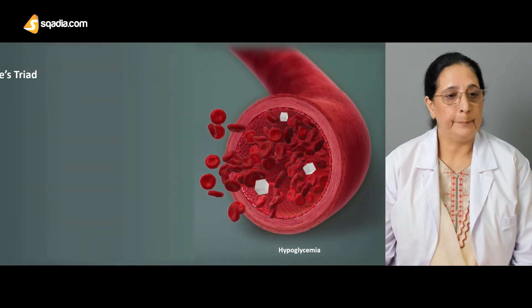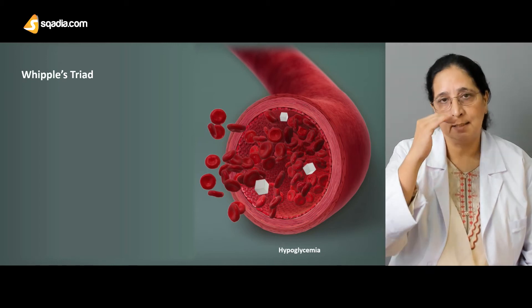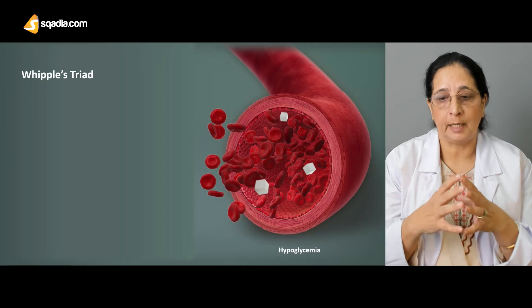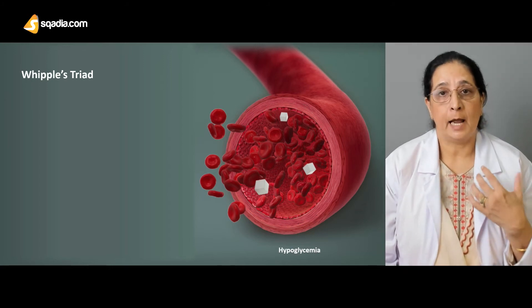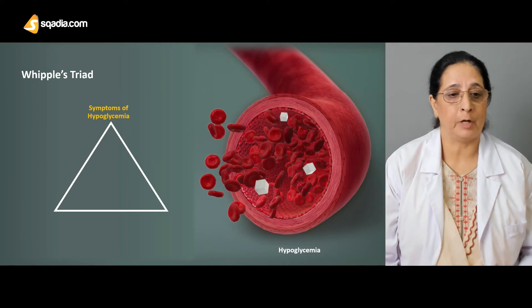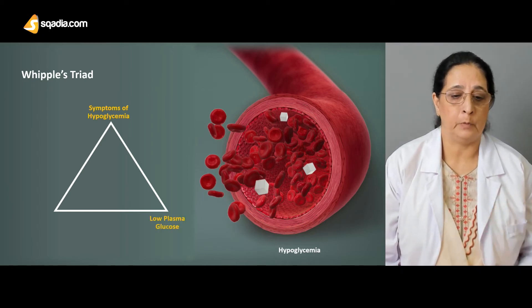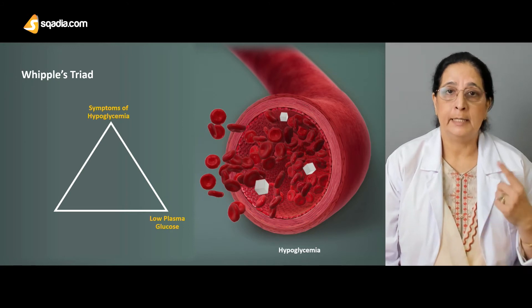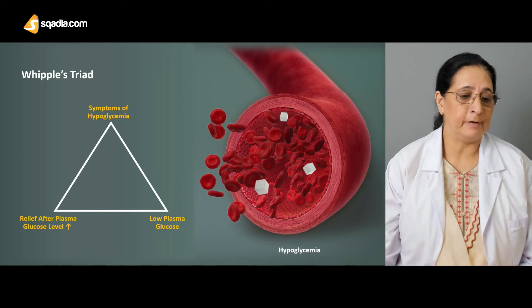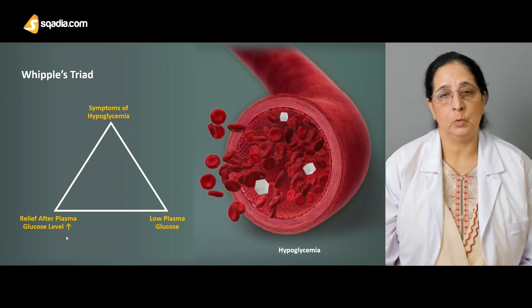Whipple's triad consists of three characteristic features that represent hypoglycemia. Included in Whipple's triad are: symptoms of hypoglycemia, low plasma glucose, and relief after giving blood glucose to the patient.